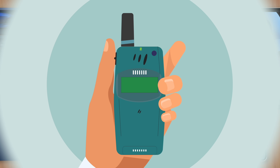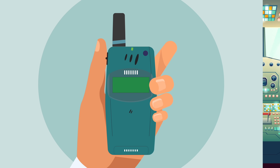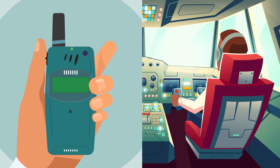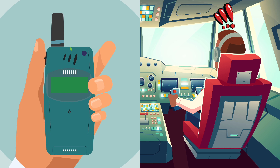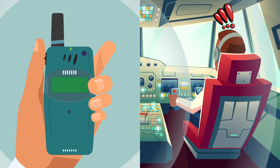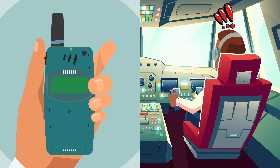It all started in the 90s, when mobile phones became popular. Airline pilots began to hear clicking noises in their headsets. They discovered that the sound was caused by transmission signals from passengers' cell phones. As more people brought phones onto flights, the more interference pilots heard.